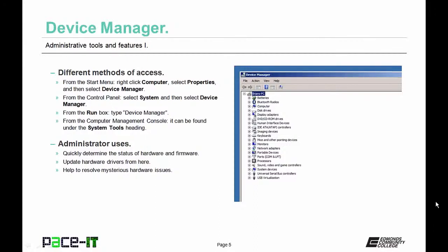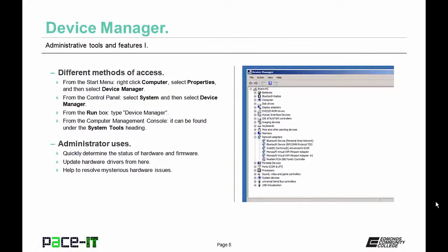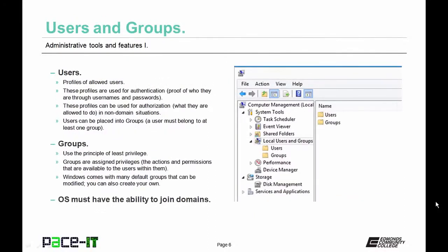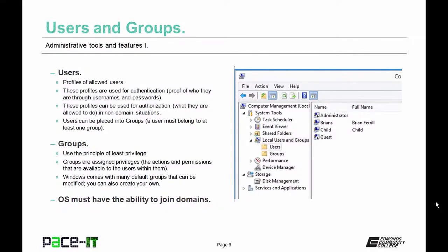Now let's discuss users and groups. Users are profiles of people allowed to utilize the system, used for authentication — proof of who the person is through usernames and passwords — and for authorization in non-domain situations. Users can be placed into groups, and a user must belong to at least one group. Groups use the concept of least privilege — groups are only assigned privileges based on what is necessary to get the job done, with no extra privileges granted.